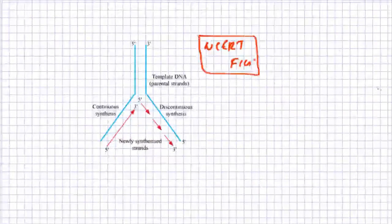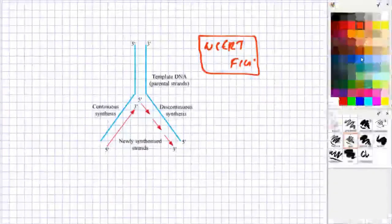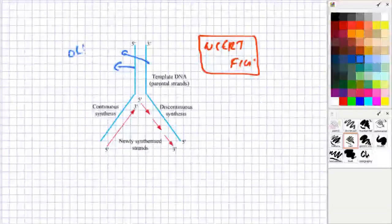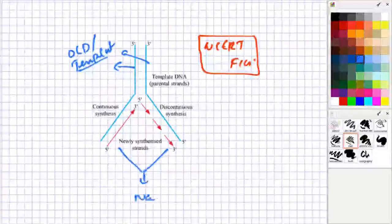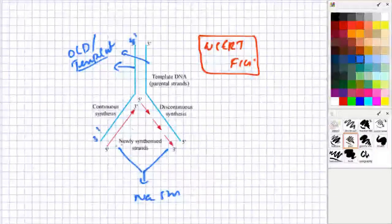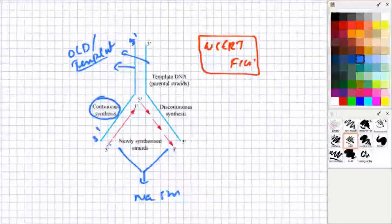This is a very familiar NCERT figure. You can see two blue strands — the blue strands are the template strands, the older template strands. And the red strands are the new strands, the newly synthesized strands. The direction of one new strand is 3' to 5' — that is marked as the continuous strand by NCERT. The other strand is marked as a discontinuous strand, and you can see the discontinuously synthesized fragments there, which will be joined later.